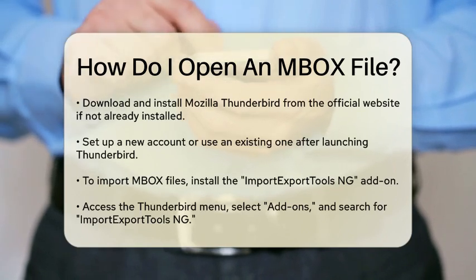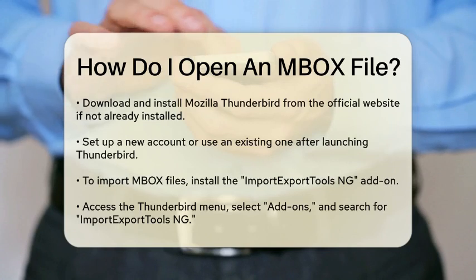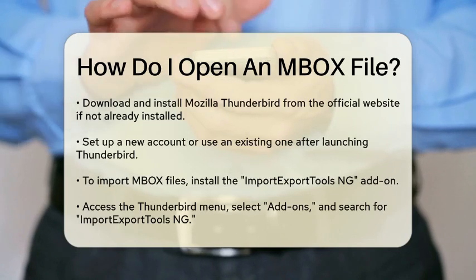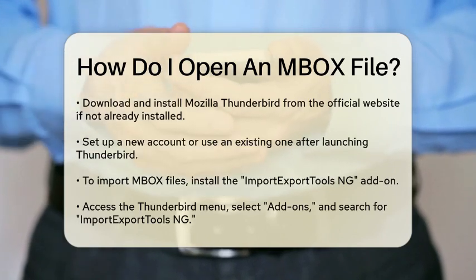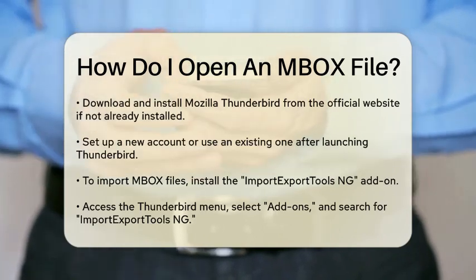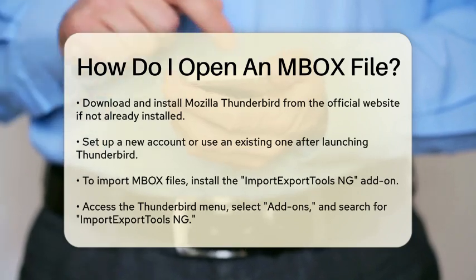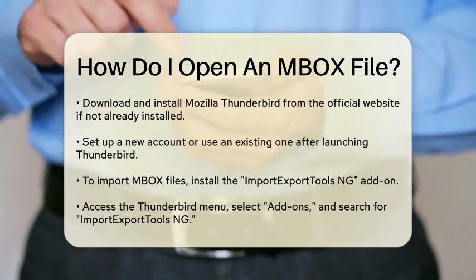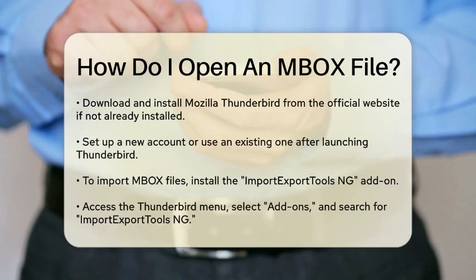After launching Mozilla Thunderbird, you will need to set up a new account or use an existing one. If you are setting up a new account, follow the prompts to create it. Once you have your account ready, you can import the MBOX file.